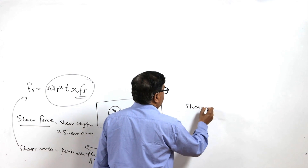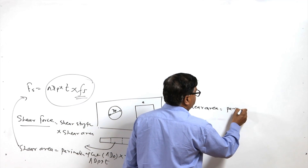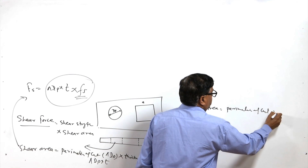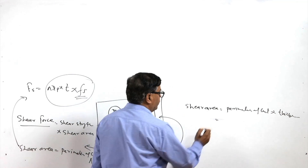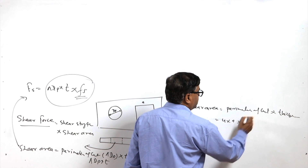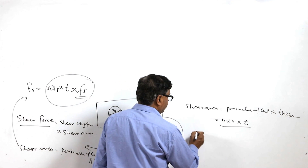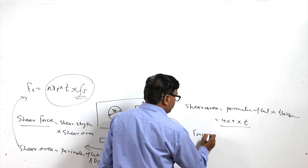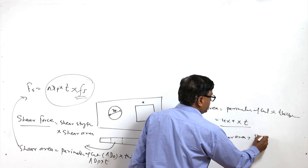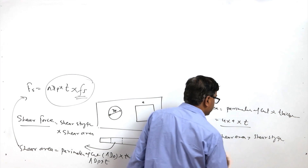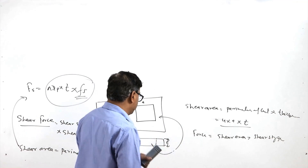For the square punch, the shear area is obtained through the perimeter of the cut — which is 4×A — multiplied by the sheet thickness T. To calculate the shear force, multiply the shear area by the shear strength of the material. We do not use the tensile strength of the material for the shearing purpose.